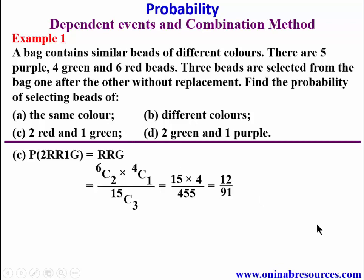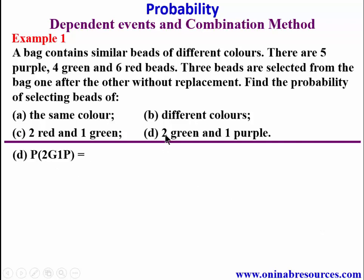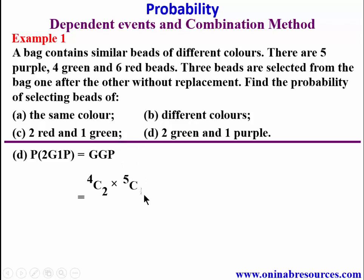For the last part of example one, part d, we look for the probability of selecting two green and one purple. In the combination method we do not need to list the arrangements. We pick two from the four green beads and one from the five purple beads, giving 4C2 times 5C1, all over 15C3.